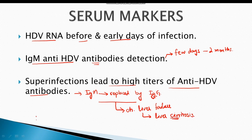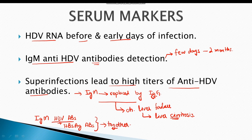In most cases, IgM anti-hepatitis D virus antibodies and hepatitis B surface antigen antibodies are measured together. If HDV antibodies are elevated, this indicates an acute phase of hepatitis D virus infection. If both anti-HDV antibodies and anti-HBs antigen antibodies are elevated, this indicates a chronic state.